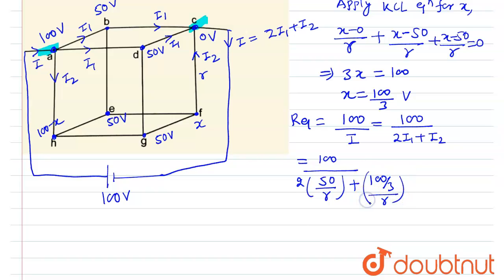So from here, R_equivalent can be written as 3r/4. This is the answer to this problem. Thank you.